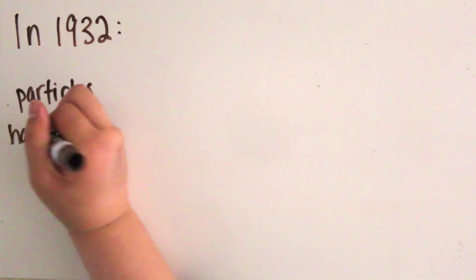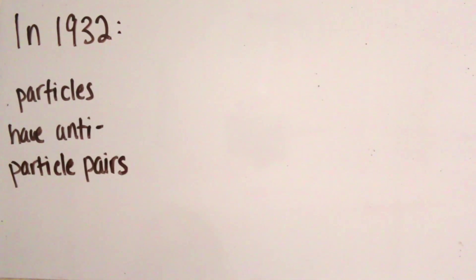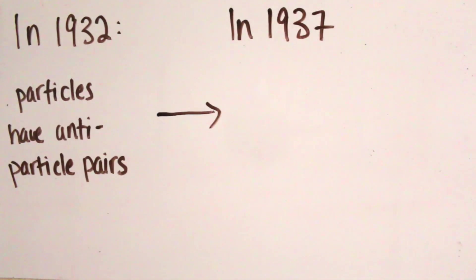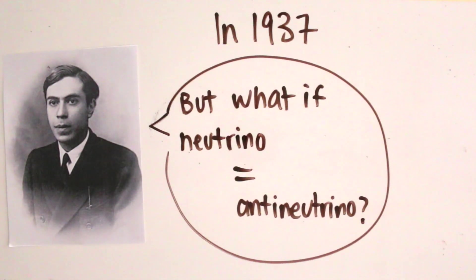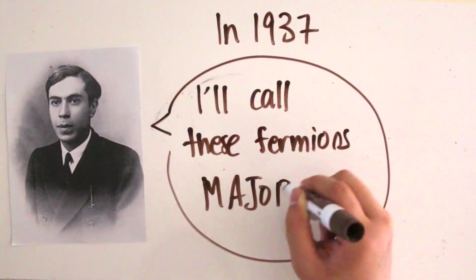In 1932, Dirac said that fermion particles have antiparticle pairs, but in 1937 Ettore Majorana suggested that the neutrino were its own antiparticle. Such fermions are called Majorana.